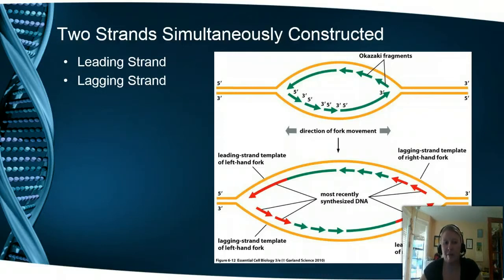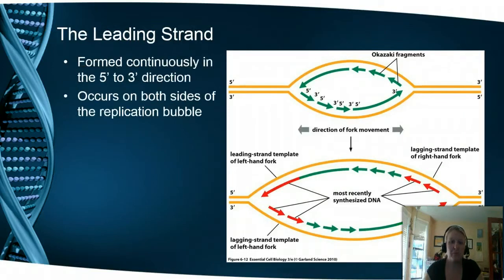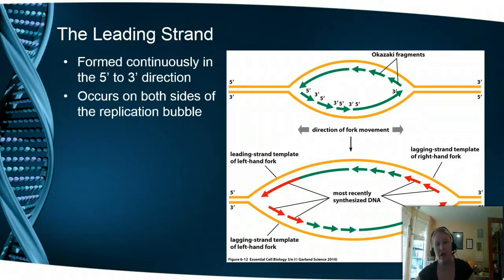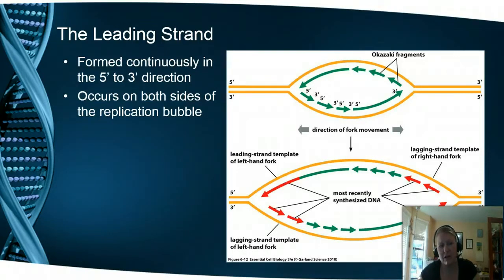We have two different strands being formed at the same time: the leading strand and the lagging strand, because DNA polymerase can only work in one direction. I have videos of both on Blackboard — please watch those because it's a lot better than looking at static pictures. The leading strand occurs on both sides of the bubble. Polymerase will just keep following along right up to the edge of helicase unwrapping the DNA, moving in a continuous fashion — nothing stops it, it just keeps on trucking.